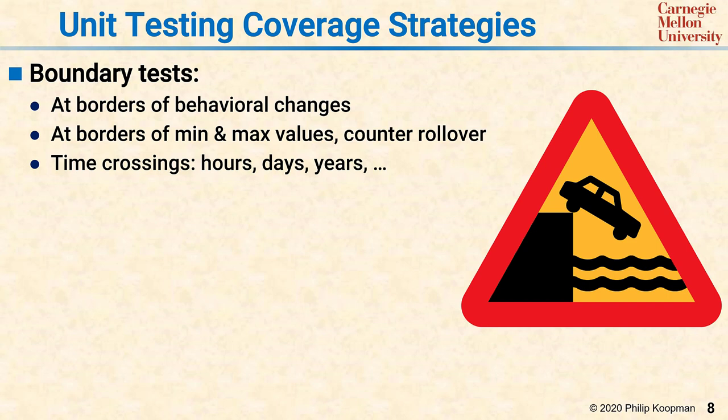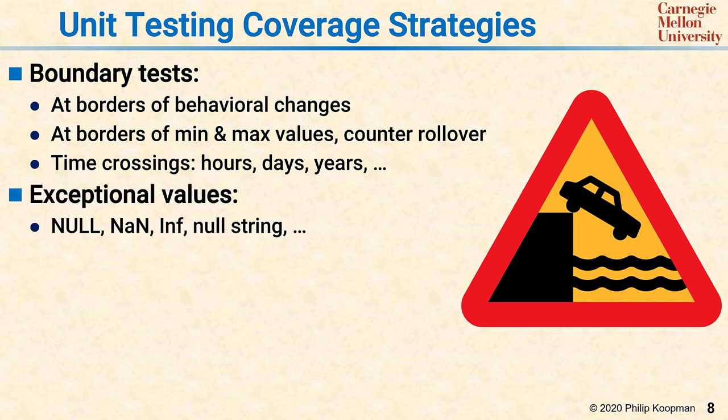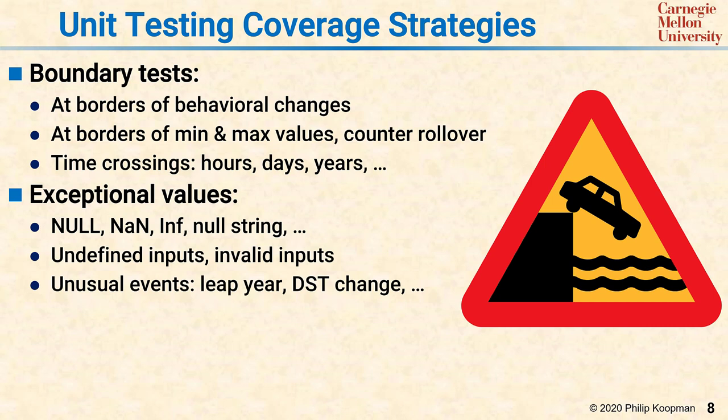A different type of unit testing coverage that also matters for robust systems is handling exceptional values. Every time there's a floating point computation, ask yourself what happens if a NaN or an infinity is pulled into the equation. For pointers, ask what happens if there's a null pointer that's dereferenced. For string operations, ask what happens if there's a null string or a string with no terminating character. Other exceptional values include undefined inputs, invalid inputs, or unusual events such as leap year or daylight savings time changes.